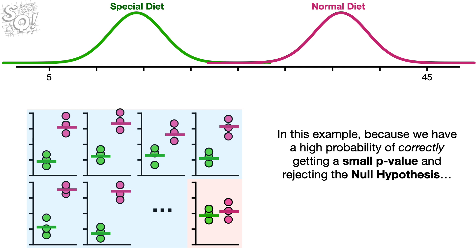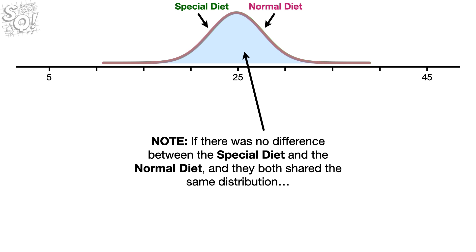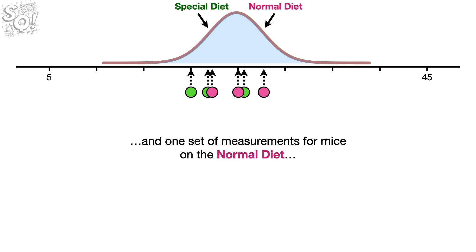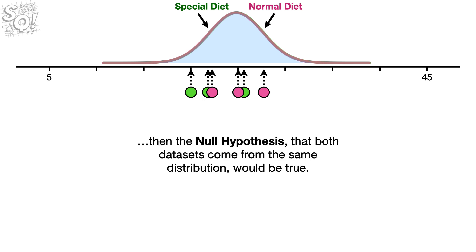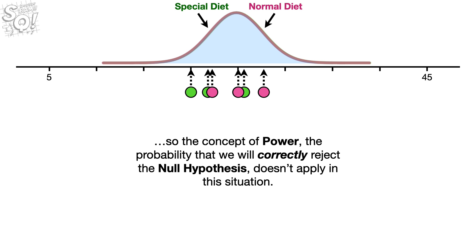In this example, because we have a high probability of correctly getting a small p-value and rejecting the null hypothesis, we have a large amount of power. Note, if there was no difference between the special diet and the normal diet, and they both shared the same distribution, then the null hypothesis that both data sets came from the same distribution would be true. In this case, there is no such thing as correctly rejecting the null hypothesis, so the concept of power doesn't apply in this situation.